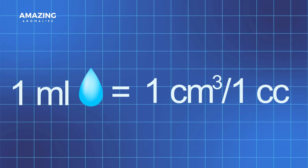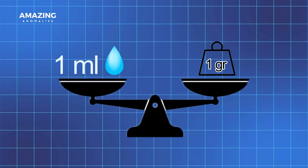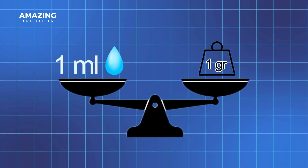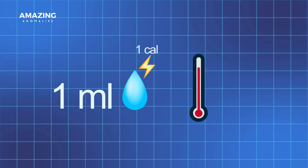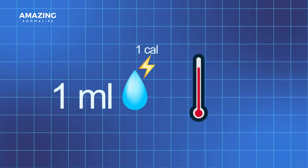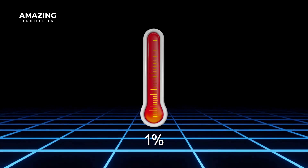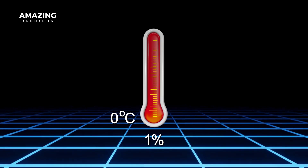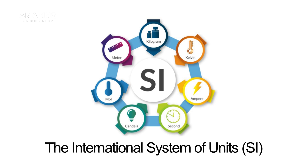One milliliter of water is exactly equal to one cubic centimeter, or one cc. It weighs one gram and takes one small calorie of energy to raise its temperature by one degree Celsius. This corresponds to a 1% change between the freezing and boiling points of water, from zero degrees Celsius to 100 degrees Celsius. That's the great synchronization of the International System of Units, abbreviated as SI, also known as the metric system.